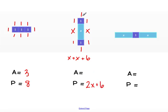And again for the area, it's just the tiles that we have. Our tiles are 1, 1, and x. So we have 1 x tile and 2 unit tiles, so our area is x plus 2.